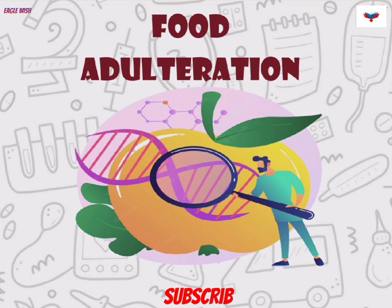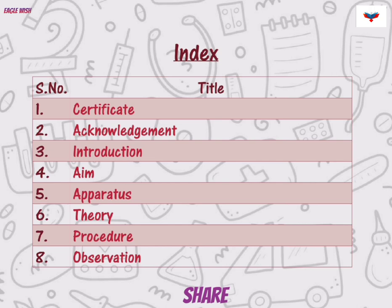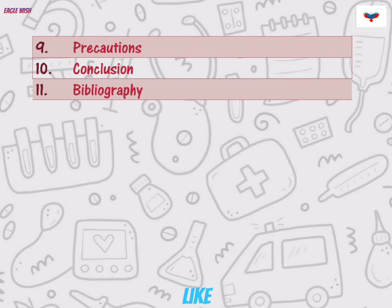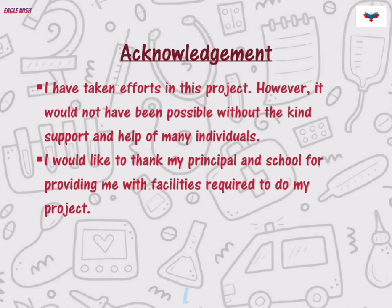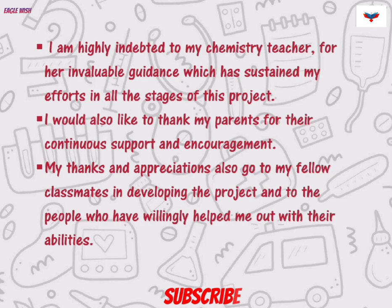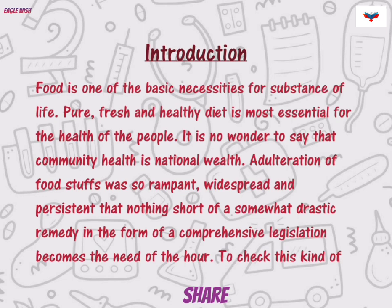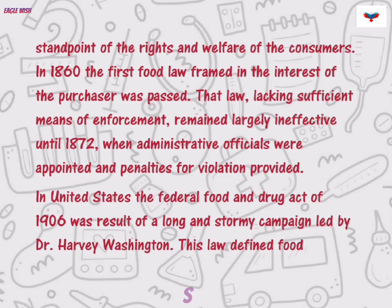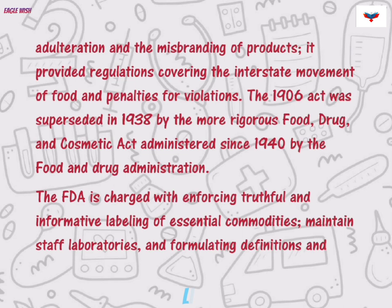Hello everyone, welcome to my YouTube channel LegalWish. In this video I'm going to show you a chemistry investigatory project on food adulteration. Let's start our project with the table of content index. After index, make certificate and acknowledgement. Try to make your project in neat and clean manner. Food adulteration can be defined as the practice of adulterating food, or contamination of food materials by adding a few substances.